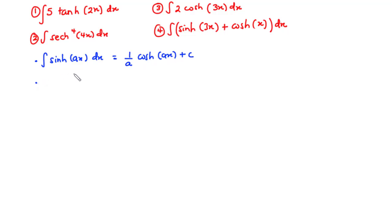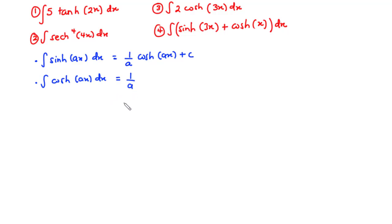Now let's move on to the second one. The integral of cosh ax dx: you also differentiate ax, and it also appears at the denominator. So you have 1 over a times sinh ax plus c.